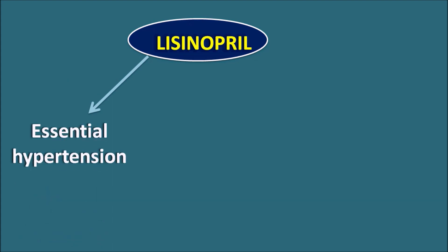What is Lisinopril? The suffix '-pril' indicates it is an ACE inhibitor, and this drug is going to inhibit the renin-angiotensin system, thereby reducing the blood pressure. That's why Lisinopril can be used in the treatment of essential hypertension.